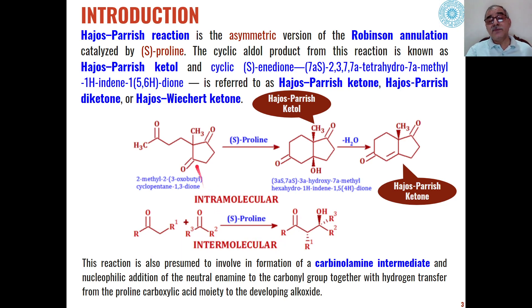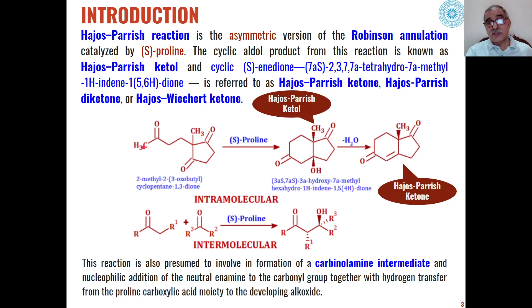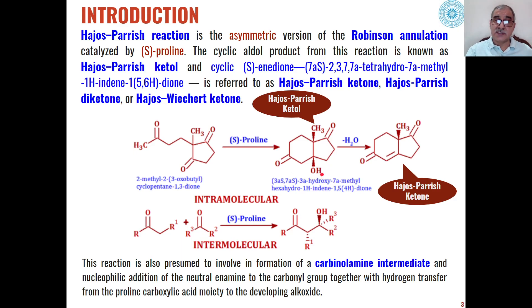For example, if the reaction is to take place intramolecularly, one of the alpha-hydrogens from the ketone part in presence of S-proline undergoes cyclization with the other ketone part of the molecule. When this acidic proton is removed, this carbon acts as a carbanion and attacks the carbonyl, and this type of ketone is formed through the cyclization reaction. This ketone is called the Hajos-Parrish ketone.